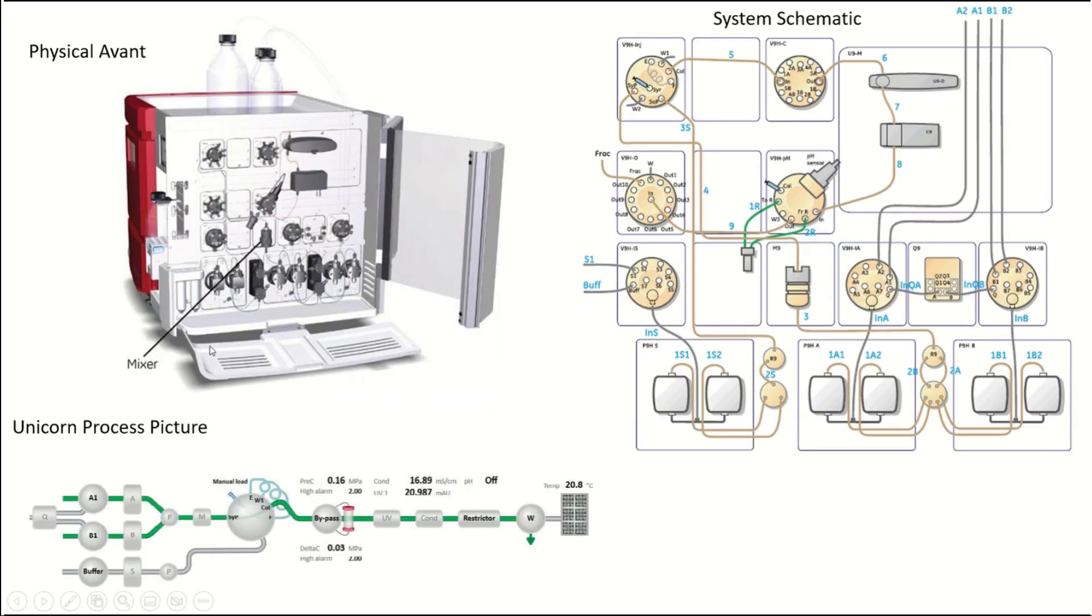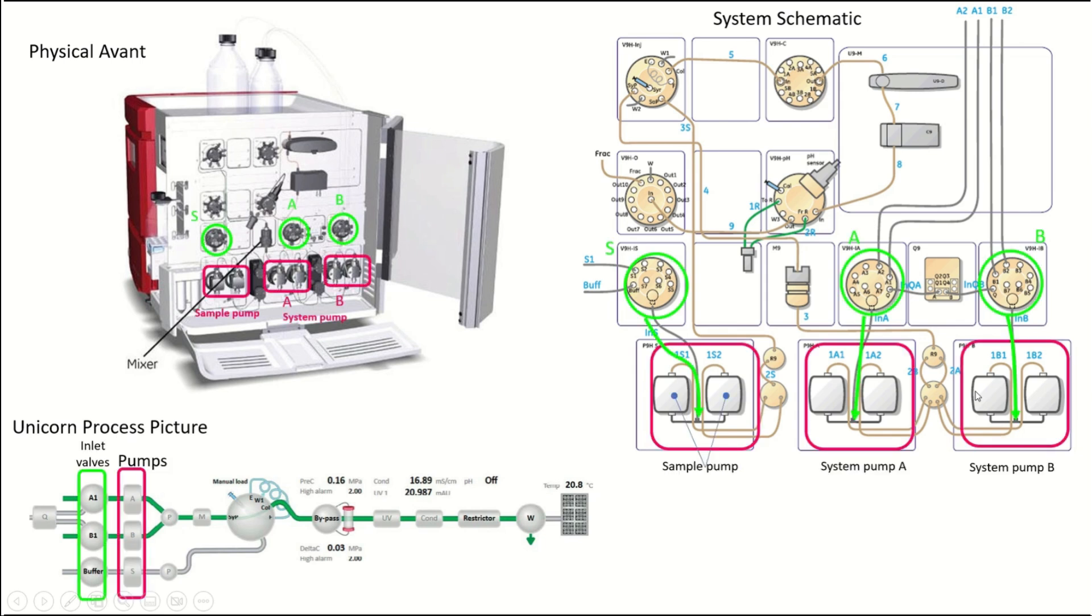Here's the physical Avant with the business end facing you, and to the right I've got a system schematic set up the same way as the physical Avant. Down here I've got the Unicorn process picture as shown in the systems control module. To start is the Q valve, which is in the middle. Honestly, I don't really use the Q valve, so I'm not going to talk about this today, but I just want to let you know it's there.